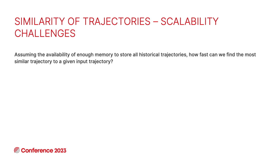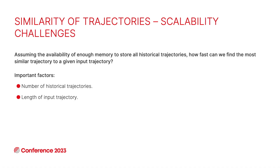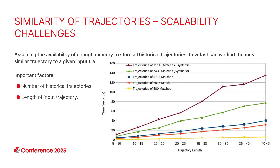Now that we have a way of comparing pairs of trajectories, how fast can we find the most similar trajectory assuming we have enough memory to accommodate all of our data? Two different factors come into play: the size of the dataset and the length of the input trajectory. We ran an experiment showing that for as few as 11,000 matches, looking at the median trajectory length of 25 to 30, it takes about 80 seconds to find the most similar trajectory — which is quite high and impractical for real-time responses.